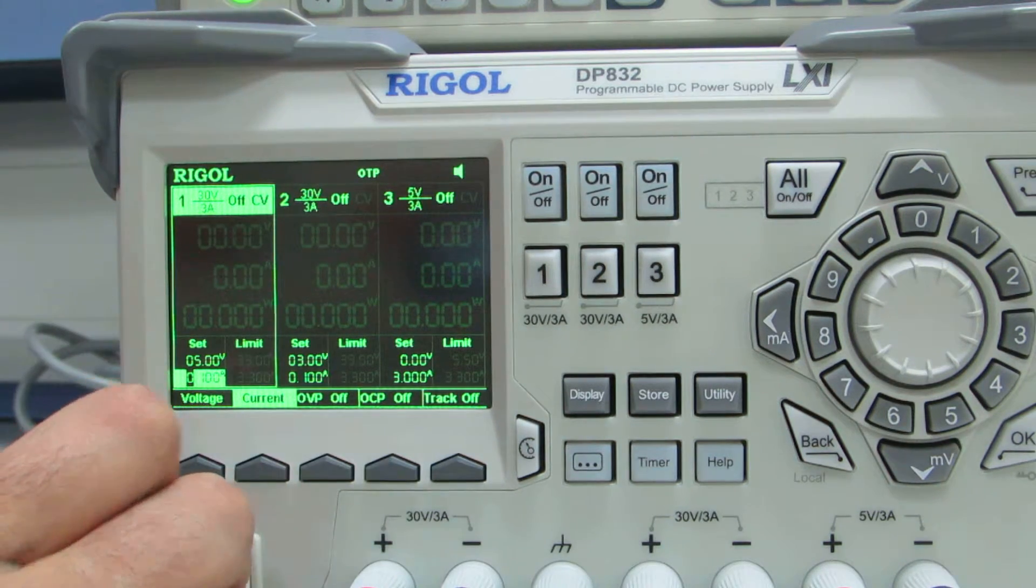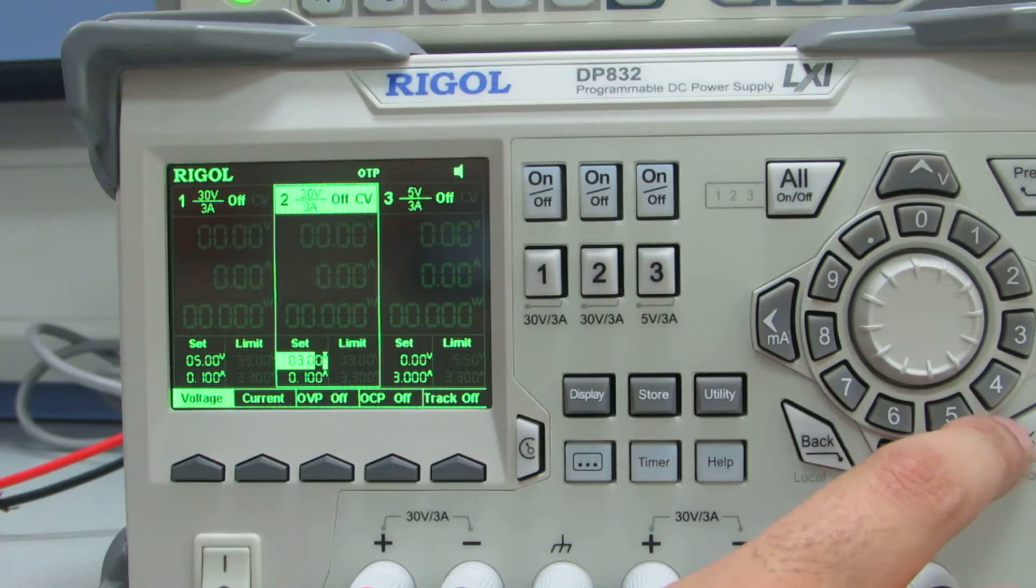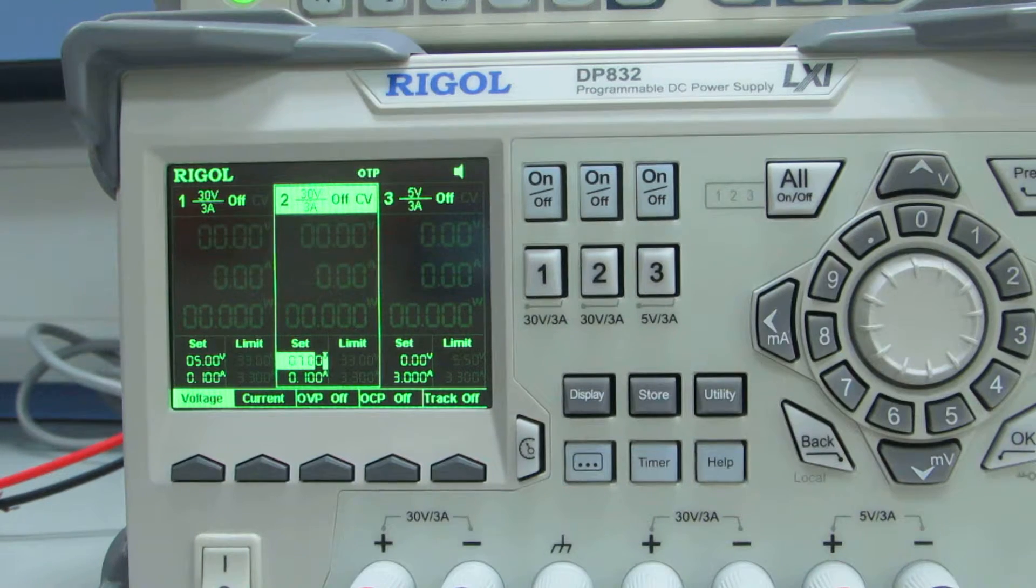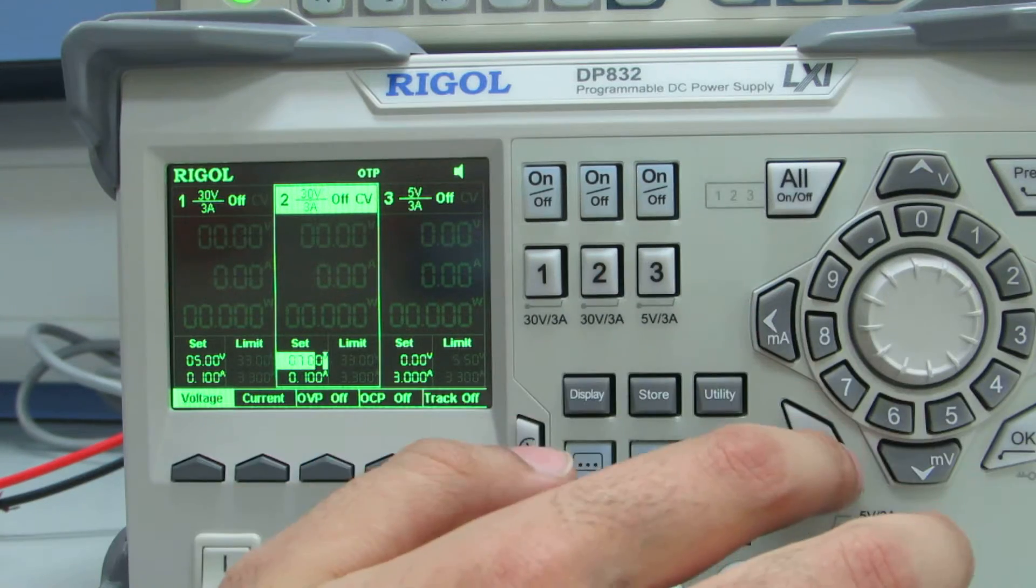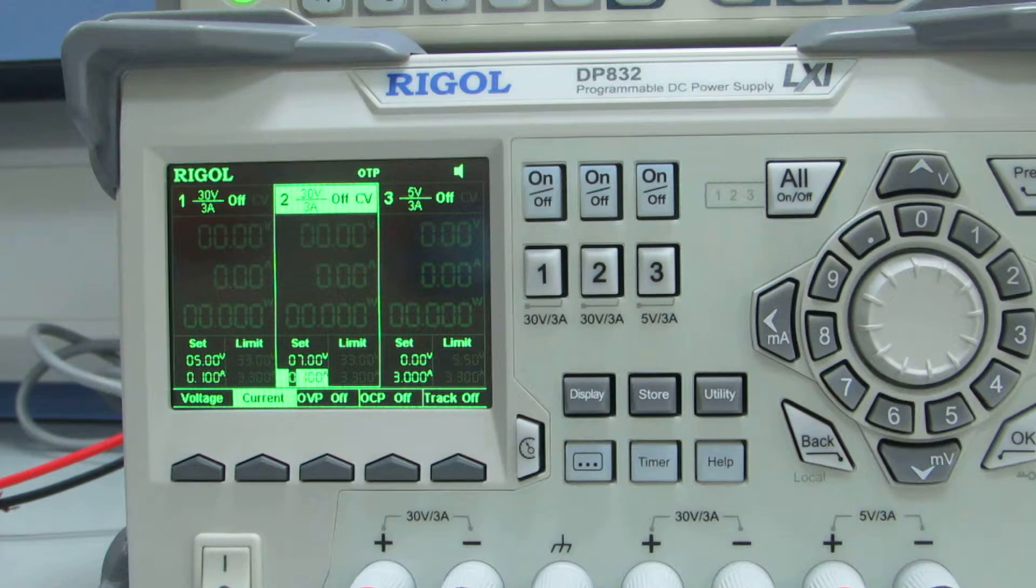Now I can go to channel 2 and do the same. Let's change the voltage. Let's say this is going to be 7 volts. And my current is going to be also let's say 100 milliampere. So it's set.